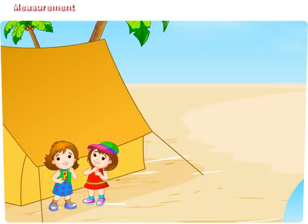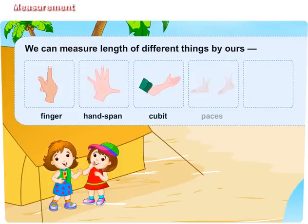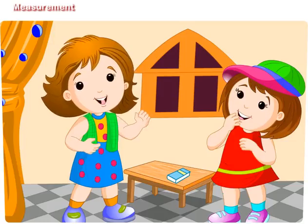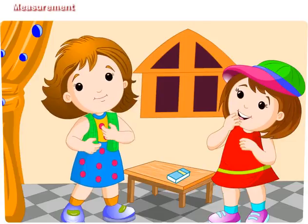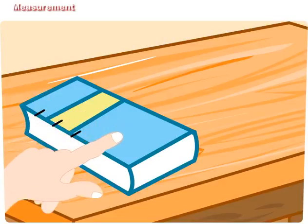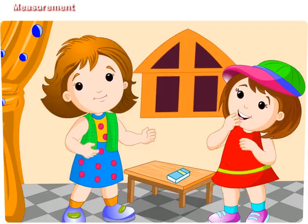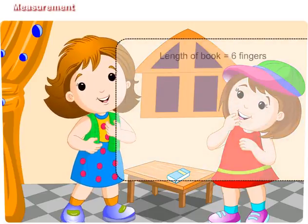Didi, how can we measure things around us? Maggie, we can measure lengths of different things by our finger, handspan, cubit, paces, and foot. For example, we can measure the length of a book using our fingers: 1, 2, 3, 4, 5, 6. So, the length of this book is equal to my six fingers.